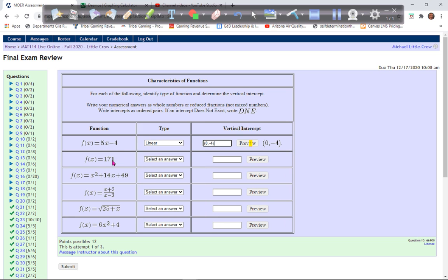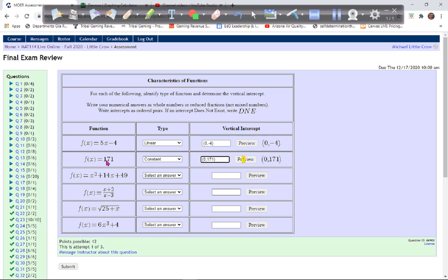This one, again you could say it's linear, it's really a horizontal line, but this is a special one that we call a constant one. There is no variable, it's always 171. And again, its vertical intercept is when x is zero. Actually it doesn't matter what x is, y will always be 171, so that's the vertical intercept.